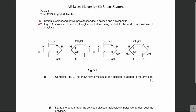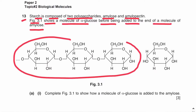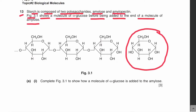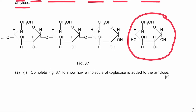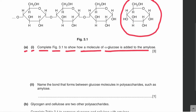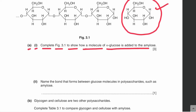Let's move on to question number 13. Starch is composed of two polysaccharides: amylose and amylopectin. Figure 3.1 shows a molecule of alpha glucose before being added to the end of a molecule of amylose. Part A1: complete figure 3.1 to show how a molecule of alpha glucose is added to the amylose. We have to draw this alpha glucose molecule attached to the end of the amylose chain.